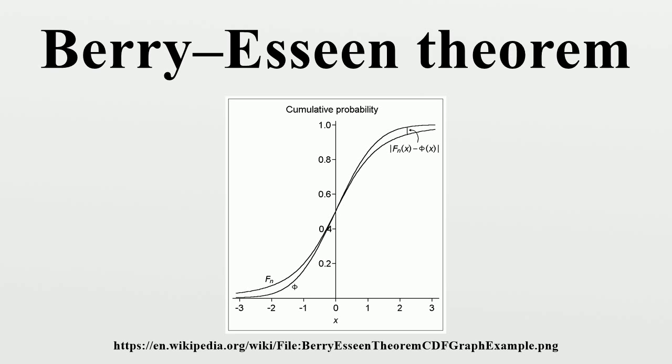that is, given a sequence of independent and identically distributed random variables, each having mean 0 and positive variance, if additionally the third absolute moment is finite,